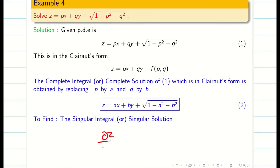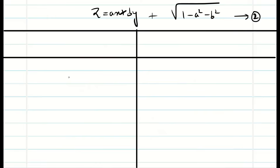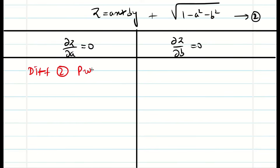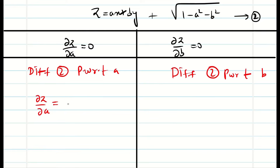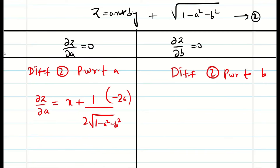To find the singular solution, we have the condition: dou z by dou a equal to 0, dou z by dou b equal to 0, where a and b are the arbitrary constants. When we differentiate equation 2 partially with respect to a, we get dou z by dou a equal to x plus the derivative of square root of 1 minus a square minus b square, which is 1 by 2 into 1 minus a square minus b square, and the differentiation of 1 minus a square minus b square is minus 2a.